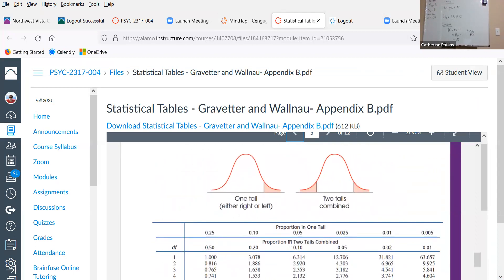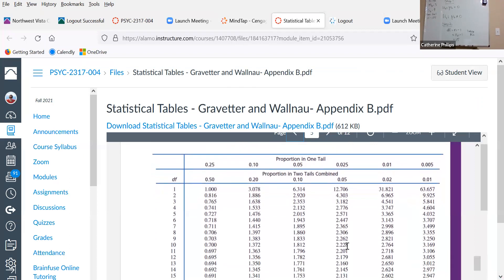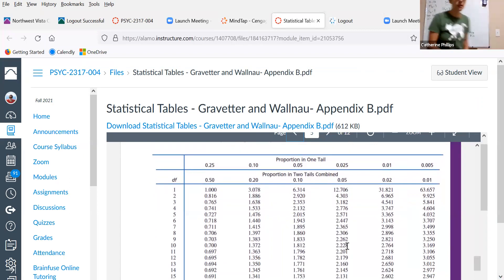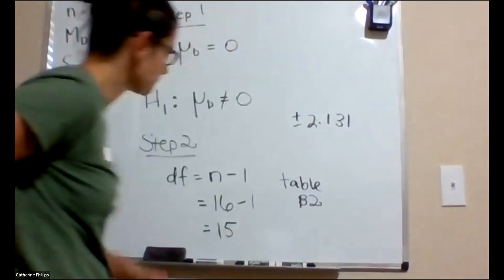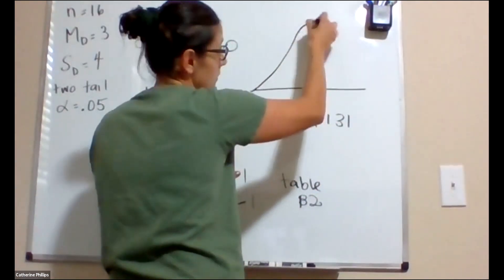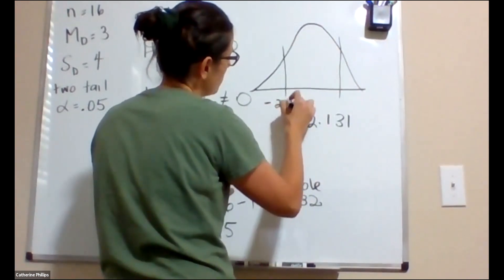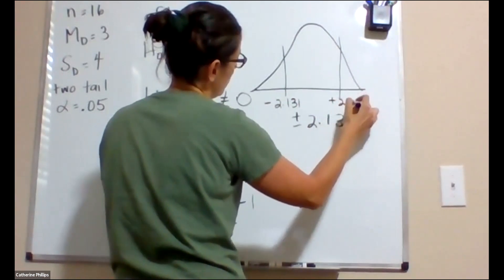The proportion in two tails combined, because it's a two-tailed test, alpha 0.05 and down to 15 degrees of freedom. And what I see here, that it is plus or minus 2.131. What this means, what does this mean? This means that if we draw it out, we still should be drawing things out. Negative 2.131, positive 2.131.